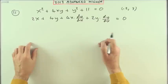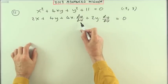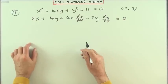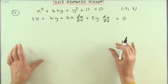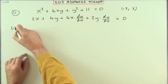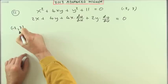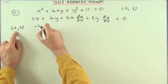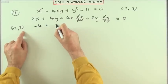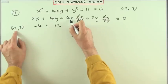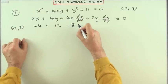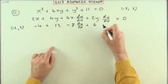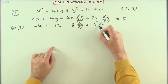There are two ways to proceed: tidy this up to write dy/dx equals, or just pop in the values and find dy/dx directly. I'll just substitute the values (-2, 3). So 2x gives negative 4, 4y gives 12, and 4x gives negative 8, so I've got negative 8 dy/dx.